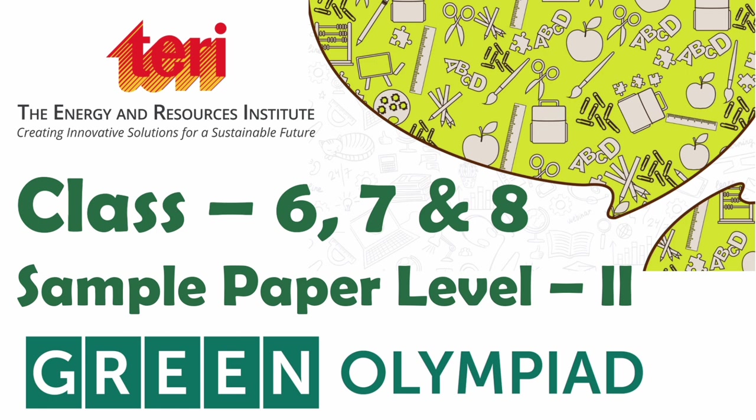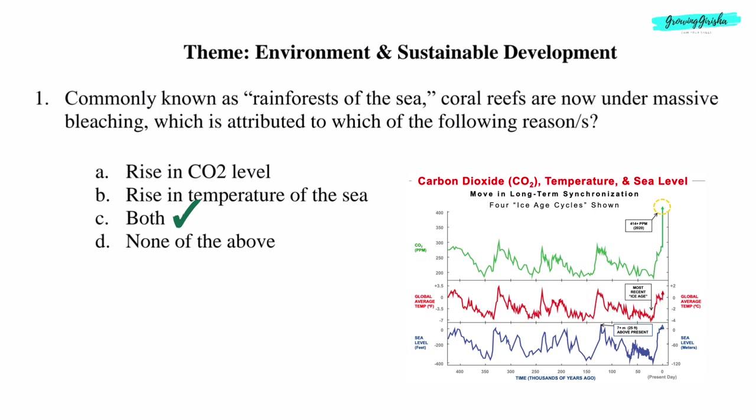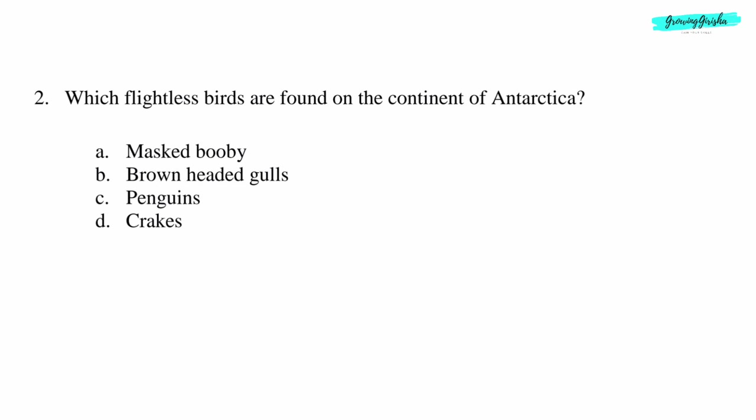Hello friends, welcome back to my channel. In this video we will discuss Green Olympiad sample paper level 2 for class 6, 7 and 8, theme: Environment and Sustainable Development. Question 1: Commonly known as 'rainforests of the sea', coral reefs are now under massive bleaching, which is attributed to which of the following reasons? Option C: Both rise in CO2 level and rise in temperature of the sea.